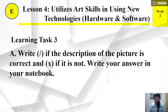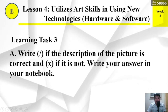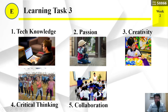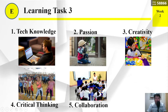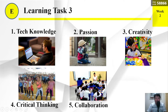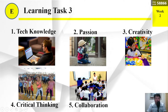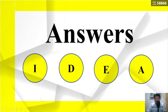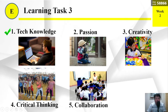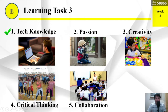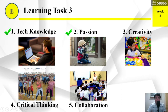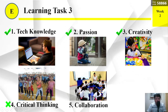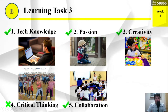Learning task number 3A: write check if the description of the picture is correct and X if it is not. Write your answer in your notebook. Number 1: tech knowledge. Number 2: passion. Number 3: creativity. Number 4: critical thinking. Number 5: collaboration. Here are the answers: Number 1 — check, Number 2 — check, Number 3 — check, Number 4 — X, Number 5 — check.